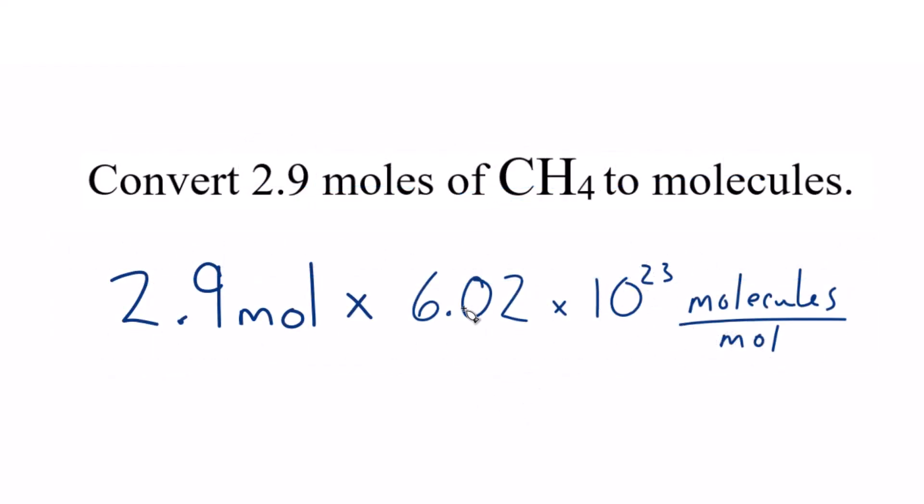Note that Avogadro's number is 6.02 times 10 to the 23rd molecules in one mole. Now that we have moles on top and bottom, they cancel out. We're left with molecules, and that's what we're trying to find. You know you set this up correctly when that happens.